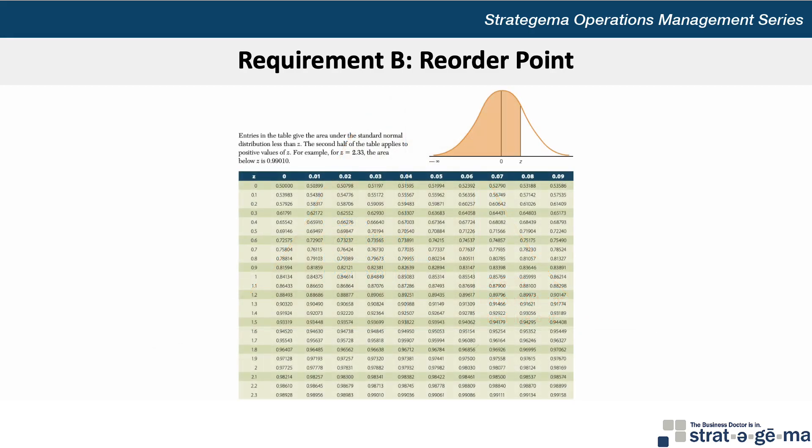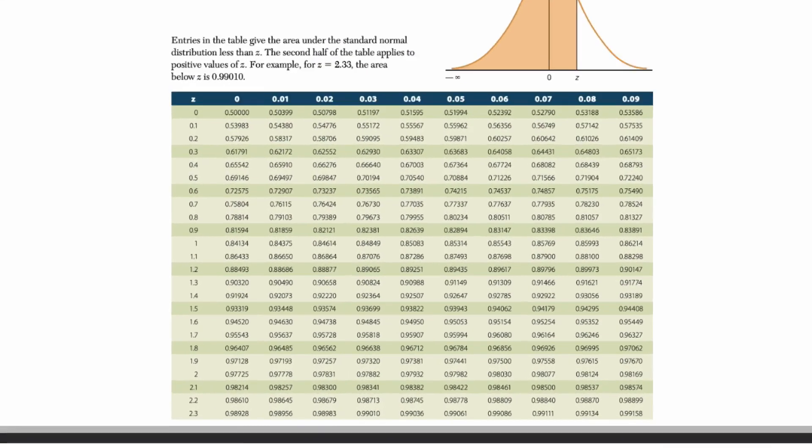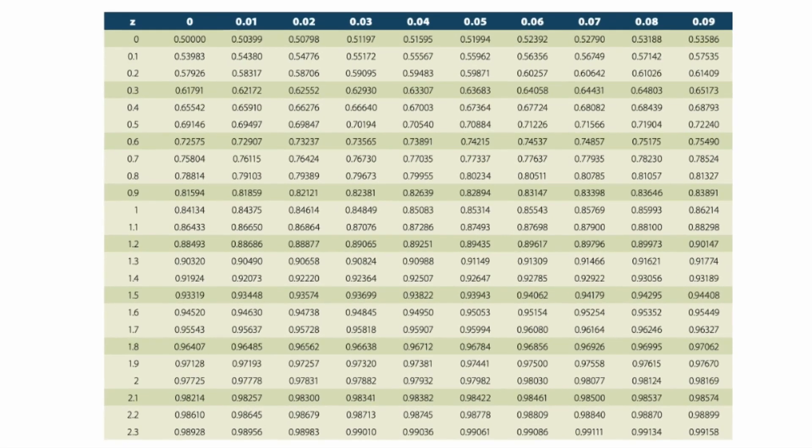This curve diagram corresponds to this standard normal distribution table. If we look for the value closest to 0.8735 without going over, we will find it by triangulating 1.1 in the Z column and 0.04 across the top, so about 1.14.